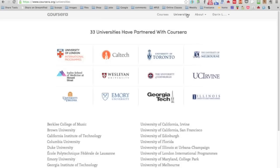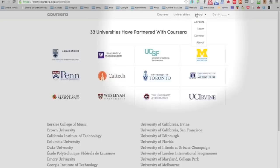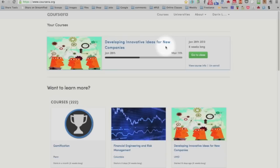So, this just shows some of those universities, the big names. Coursera currently works with about 33 universities. And I'm pulling you into a course that I'm actually enrolled in right now. Developing innovative ideas for new companies. And I'm clicking go to the course.